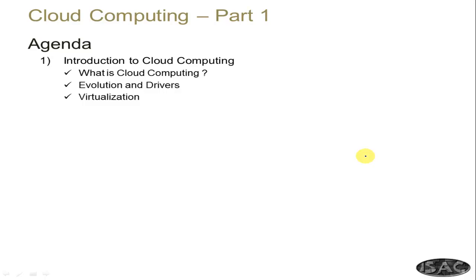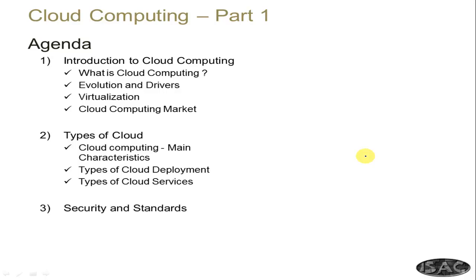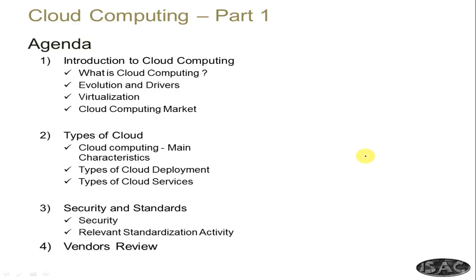We'll also look at how the market for cloud computing is shaping up. In the next chapter we will discuss the different types of cloud - the main characteristics, cloud deployment types, cloud service types, security and standards for cloud computing, relevant standardization activities, and the various vendors who provide cloud computing services.